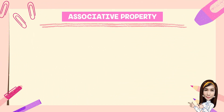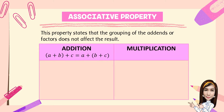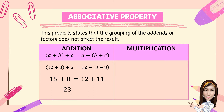Third, we have associative property. For addition, we have the quantity (A plus B) plus C is equal to A plus the quantity (B plus C). For example: the quantity (12 plus 3) plus 8 is equal to 12 plus the quantity (3 plus 8). Adding inside the parentheses first: 12 plus 3 is 15, plus 8; and 3 plus 8 is 11. Then 15 plus 8 is 23, and 12 plus 11 is also 23. So in addition, the grouping of the addends does not affect the sum.